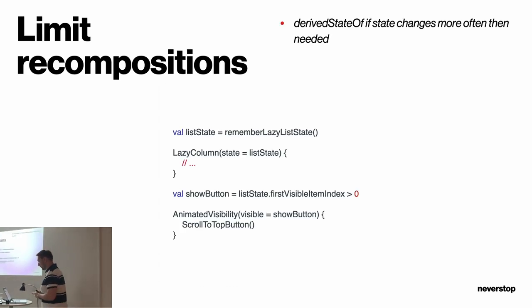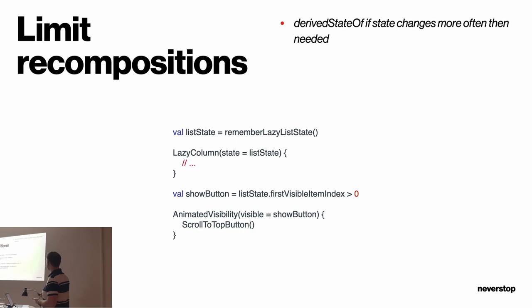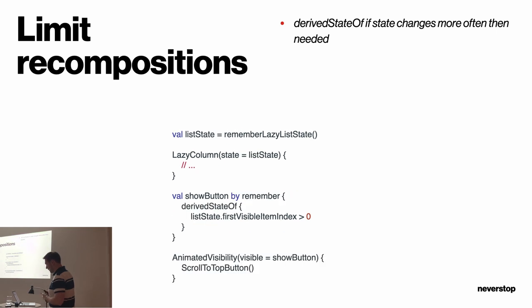Another thing is limiting recomposition. If nothing changes, try to limit it — think of it like distinctUntilChanged in your flows. Here we have an example where you observe the list state when the user scrolls, and if it matches a condition, we show a button. We know that won't happen very often, so to limit the number of recompositions, we can surround it with remember and then derivedStateOf.